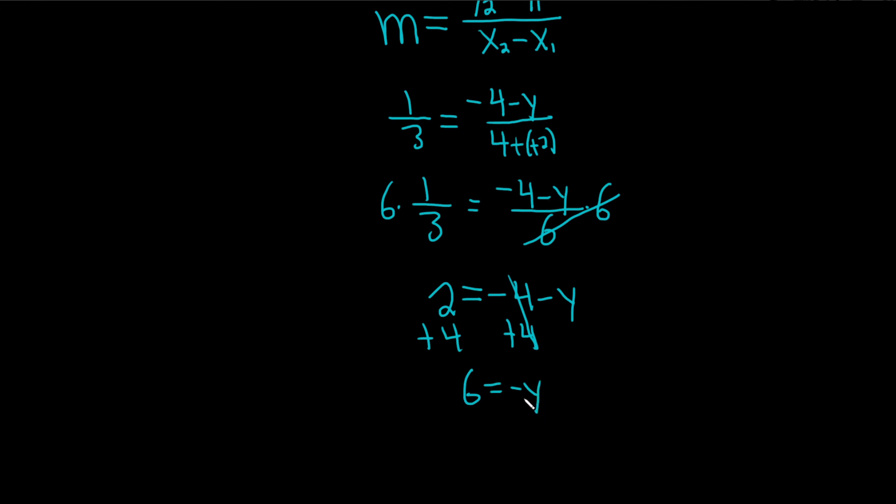And then lastly, we can just divide by negative 1 to get rid of the negative sign. So we end up with y equals negative 6, and we have successfully found y.